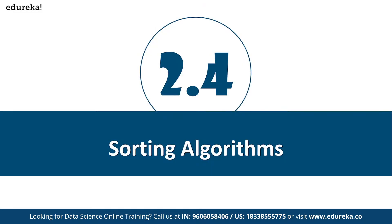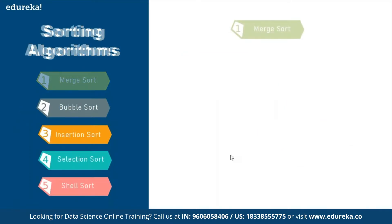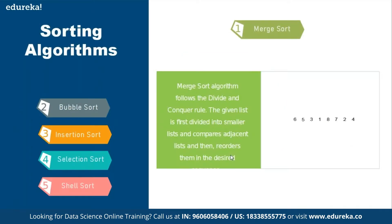Sorting algorithms are about how you sort data. There are different techniques: merge sort, bubble sort, insertion sort, selection sort, and shell sort. All of them sort data — arranging it in ascending or descending order — but they differ in how they achieve this, and some are much faster than others. Merge sort uses a divide and conquer approach where the list is divided into smaller lists, adjacent lists are compared, and then reordered accordingly.